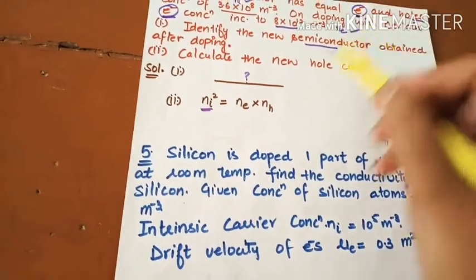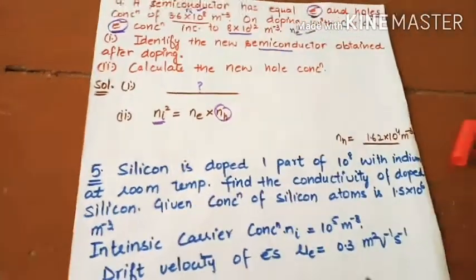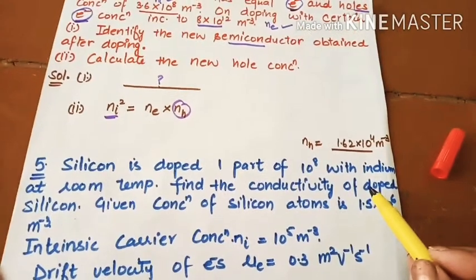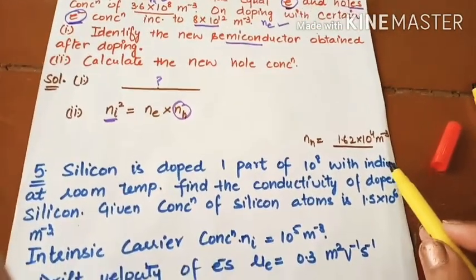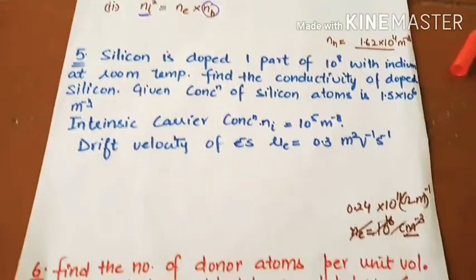You can calculate Nhi, and the answer is 1.62 into 10 power 14 per meter cube.